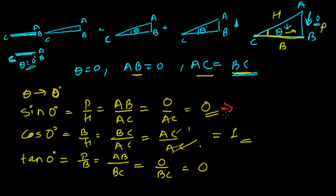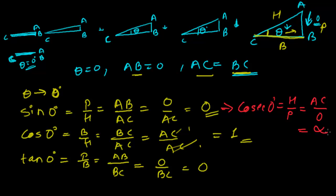Now find out the value of cosec zero. Cosec zero equals H upon P — that is AC upon AB. P is zero, so AC upon zero gives infinity, which is undefined. Division of something by zero is always undefined. So the value of cosec zero is undefined.